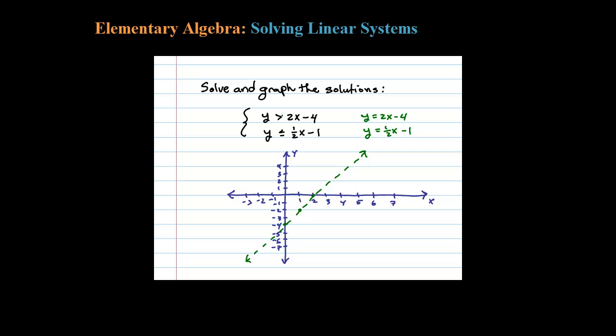If you look at the original system right here, we had a strict inequality—there's no equals—so that means the points on the line actually are not included in the solution set.